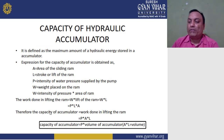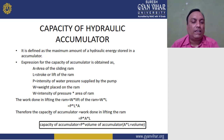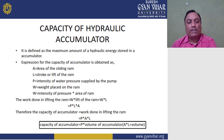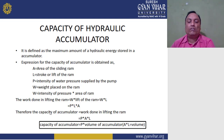The capacity of a hydraulic accumulator is defined as the maximum amount of hydraulic energy stored in the accumulator. The variables are: A = area of sliding ram, L = stroke or lift of the ram, P = intensity of water pressure supplied by the pump, and W = weight placed on the ram. The relationship is W = P × A, so P = W / A. Work done is W × L, which equals P × A × L.